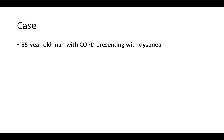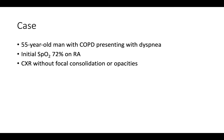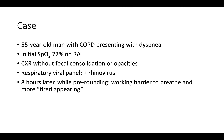Let's start with a case. Your team picks up a new admission in the morning. The patient is a 55-year-old man with COPD who initially presented with dyspnea. His initial oxygen saturation was 72% on room air and he required 3 liters nasal cannula to maintain an oxygen saturation greater than 90%. Chest x-rays showed no focal consolidation or opacities. His respiratory viral panel returned positive for rhinovirus. While you are pre-rounding, the nurse calls to tell you that the patient is working harder to breathe, more tired appearing, and requiring 10 liters nasal cannula to maintain an oxygen saturation greater than 90%. You transfer the patient to the MICU for further management.